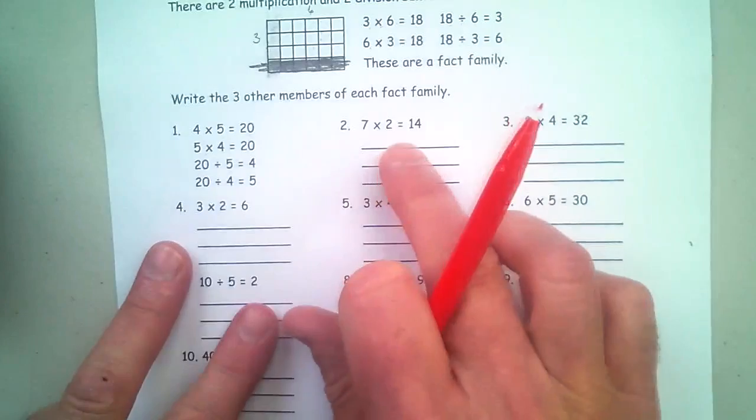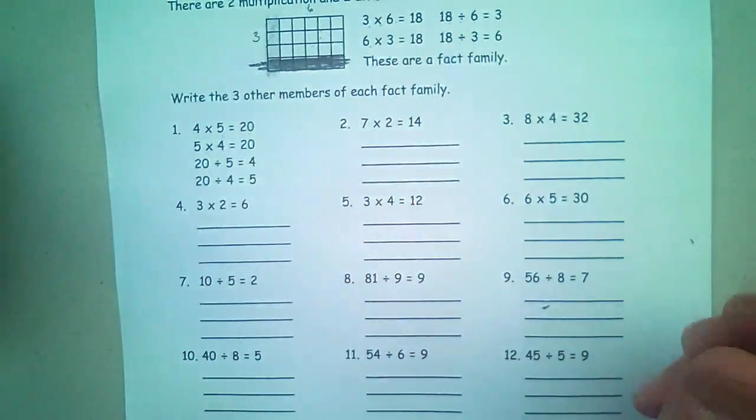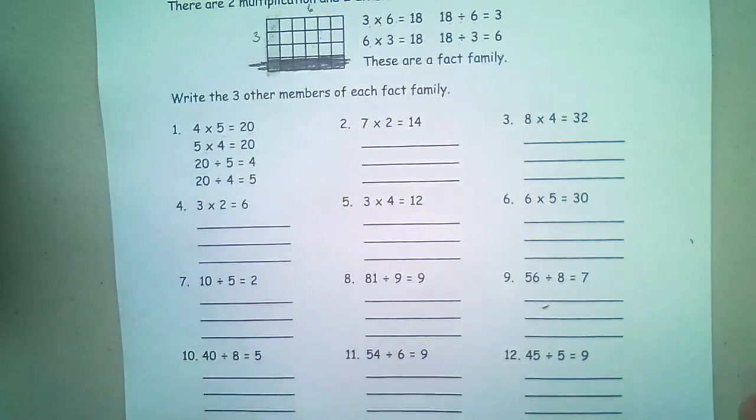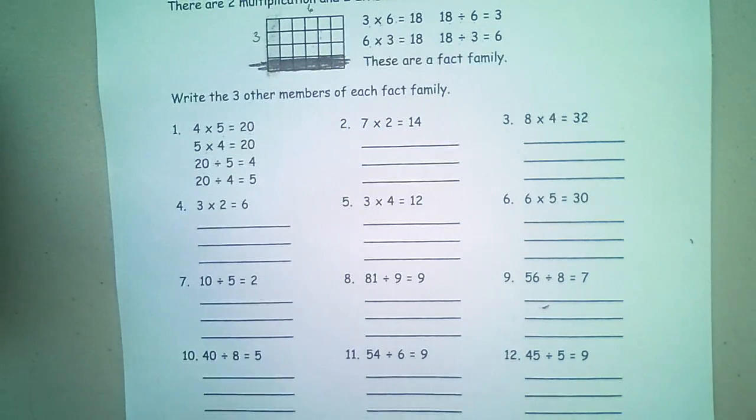So just like 7 times 2 is 14, of course we're going to use the commutative property. And the commutative property is that if you know 7 times 2 is 14, you automatically know that 2 times 7. So in a sense, half the times tables are done for us.